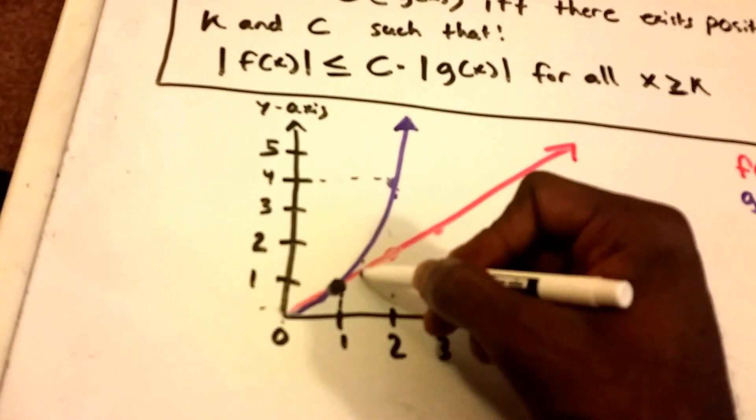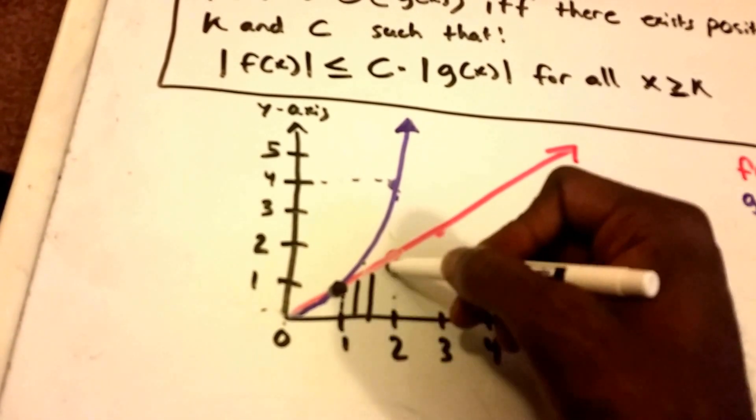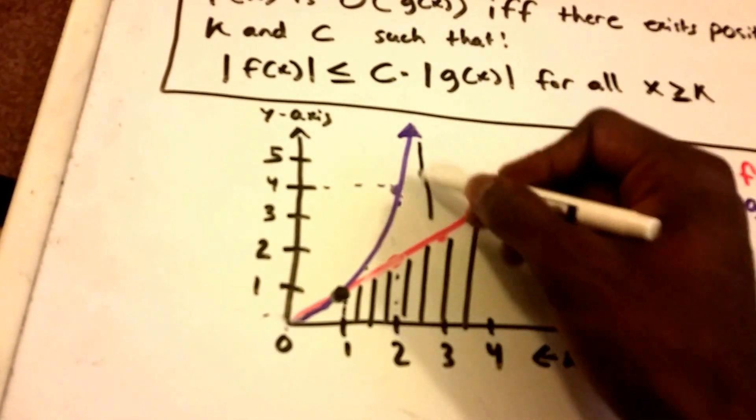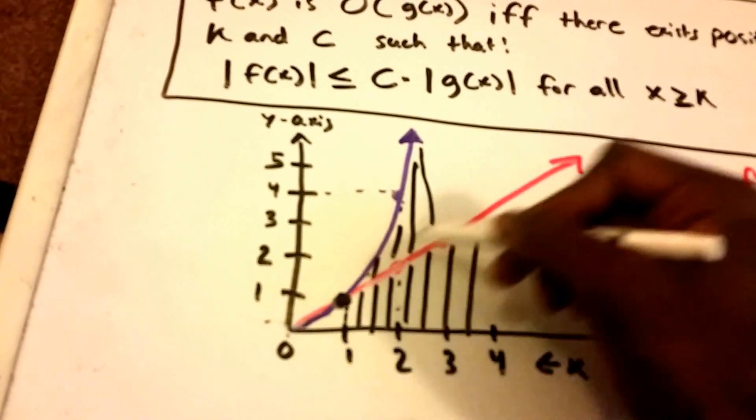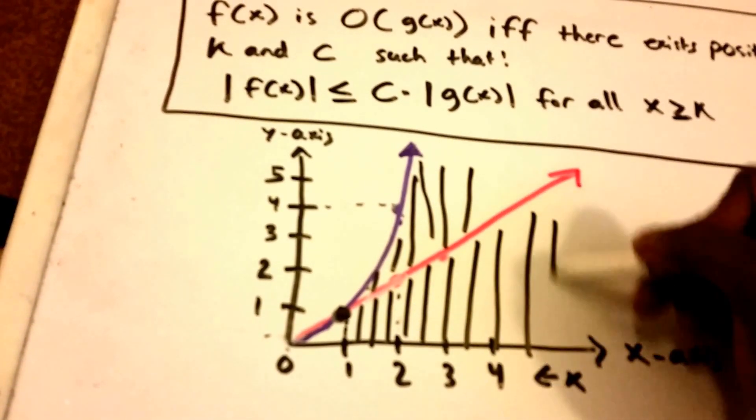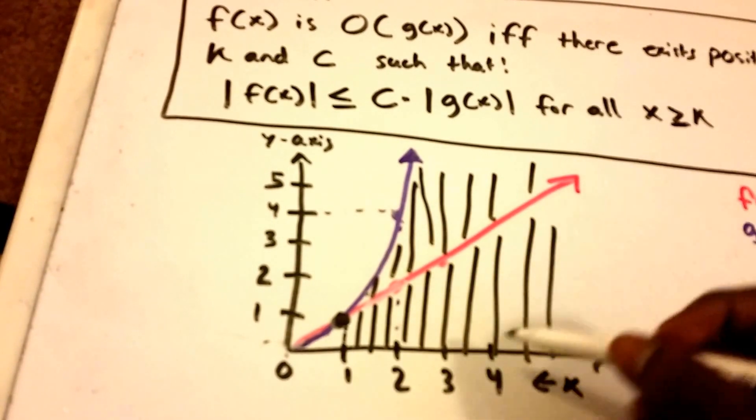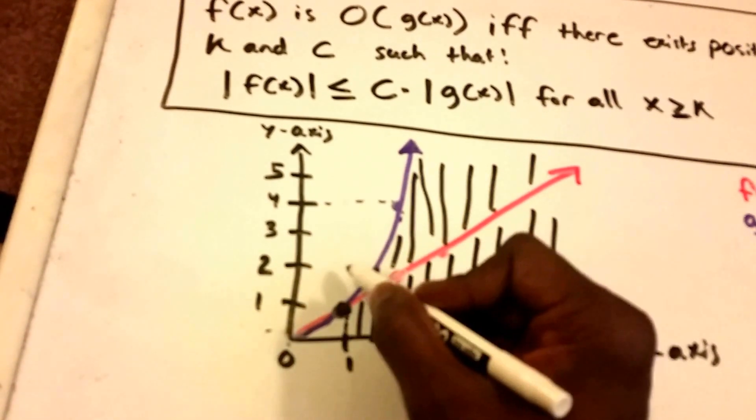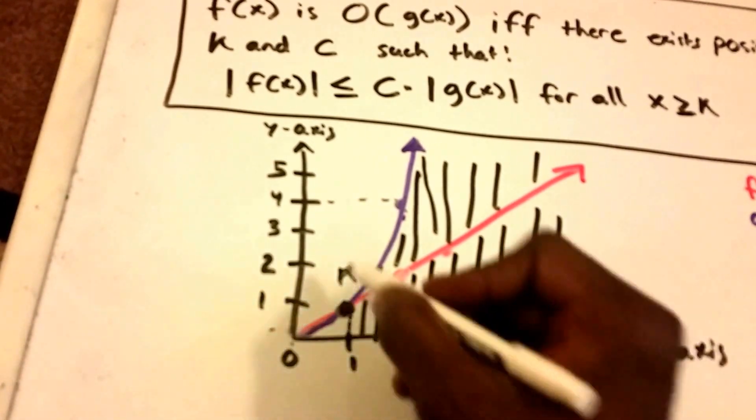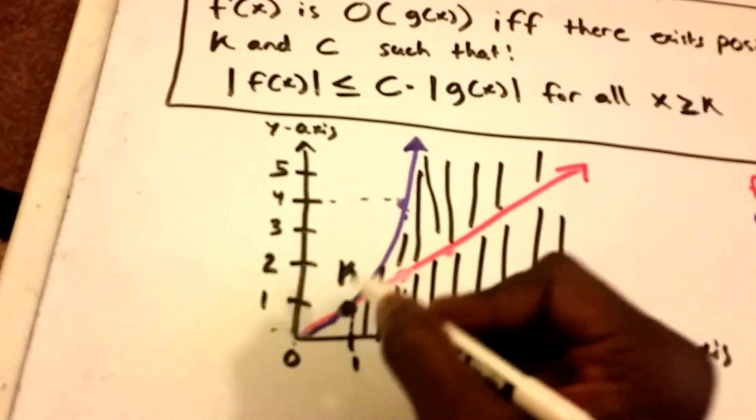So all of this here, all these other values under that G of X curve, all those other values of X can be used, and this is actually what our K value could be. So this is our K value.